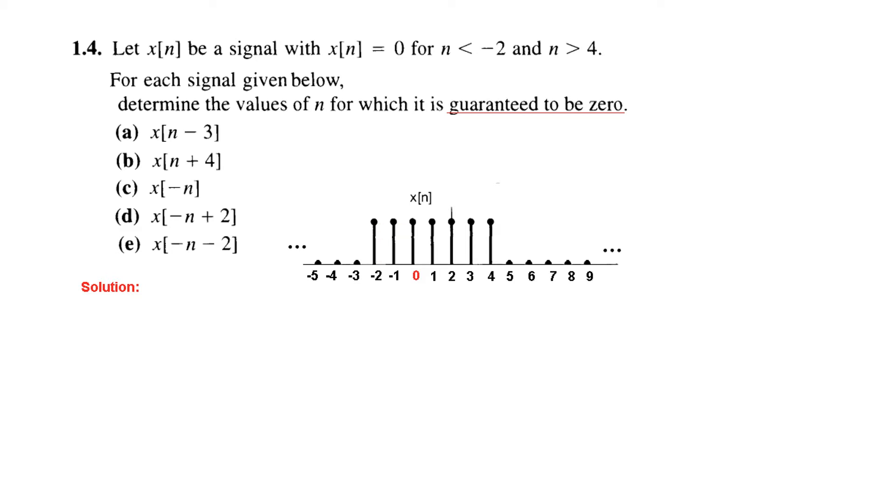These all values are 1 and these are 0. Now according to this definition x[n] is 0 for n less than minus 2. So we have drawn it in a manner that for less than minus 2 it is 0 and also it is 0 for n greater than 4. So greater than 4 the signal is 0 at all other places it is 1. So we will proceed with this signal as our base signal.